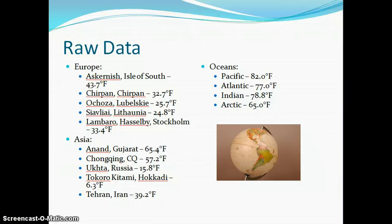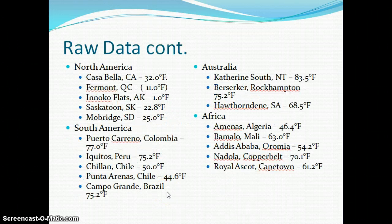For our four oceans, we took four points. For the Pacific Ocean we got 82.0, 77.0, and 78.8 degrees Fahrenheit, and for the Arctic we got 65.0 degrees Fahrenheit. In North America we have 32, negative 11, 1, 22.8, and 25 degrees Fahrenheit.